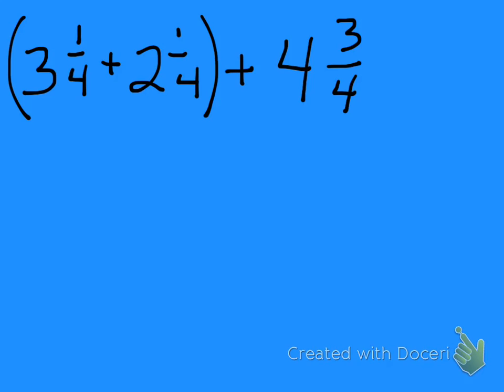Here's my first example: 3 and 1/4 plus 2 and 1/4 plus 4 and 3/4. Parentheses normally mean you do that first, but I want to try to find two fractions that are going to be equivalent to a whole. So I look through my fractions — I see 1/4 and I see 3/4, and I know that 1/4 plus 3/4 is going to give me a whole.